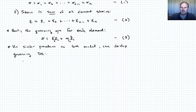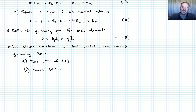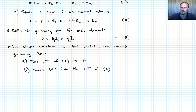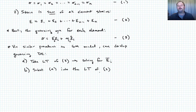In this case, step A would be to take the Laplace transform of equation three. Step B would be to substitute what we just computed in step A into the Laplace transform of equation two, and then solve for epsilon_i bar.